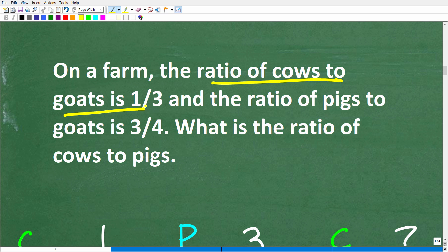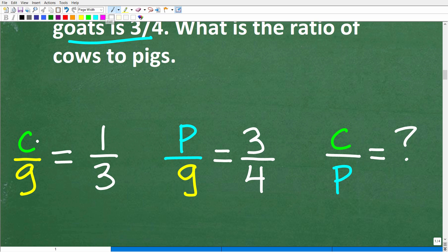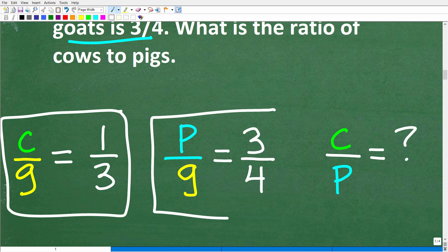So we have one ratio, cows to goats. And then we have another ratio of pigs to goats. We're given these specific ratios, and we're asked to find this other ratio of cows to pigs. Even I have to reread this not to be confused. All right, so let's use simple variables like C for cows and G for goats and P for pigs just to define everything that's going on in this problem. So the ratio of cows to goats is 1 to 3. And then we have another ratio for pigs to goats, that's 3 to 4. And the question is, what is the ratio for cows to pigs? So this is what we're looking for.